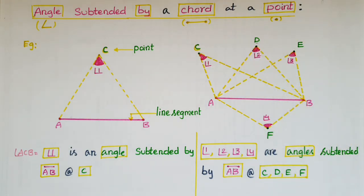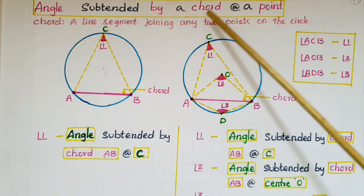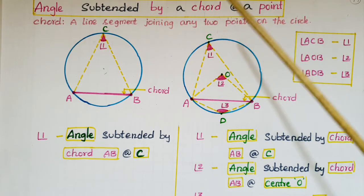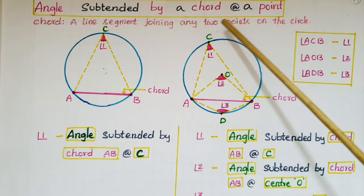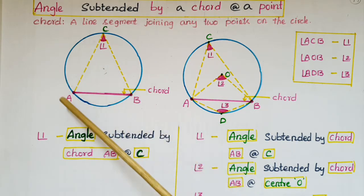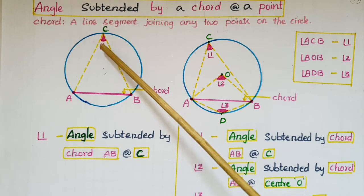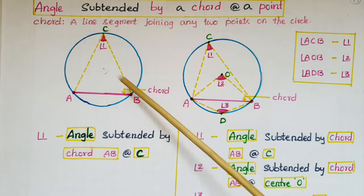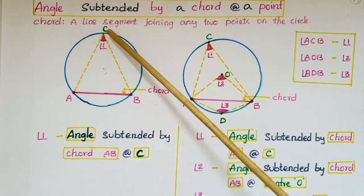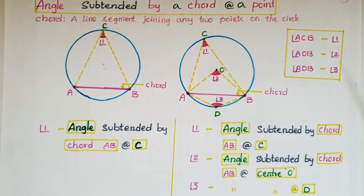Now I am going to tell about what is an angle subtended by a chord at a point. We know that a chord is a line segment joining any two points on the circle. See this figure — here AB is a chord and C is a point on the circumference of the circle. Then angle 1, or angle ACB, is called the angle subtended by this chord AB at point C.